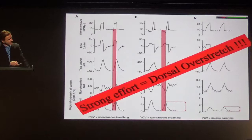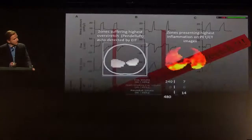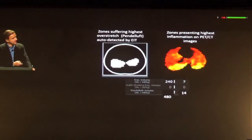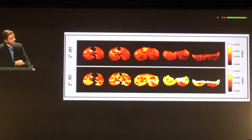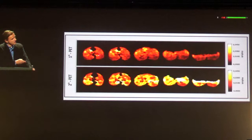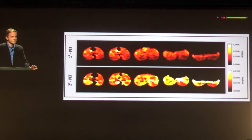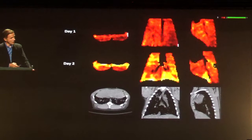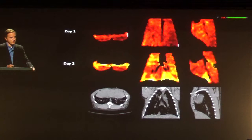Whenever we have too strong effort, this dorsal overstretch occurs independent of the mode of ventilation. When animals perform very strong Pendelluft over hours of mechanical ventilation, they have a first hit of lung injury, and then 24 hours later an increase in inflammation due to this big overstretch — and the tidal volume in these cases was only 5 to 6 mL/kg. This clearly shows there is a localized overstretch that you cannot sense in the global signal collected in the proximal airway. The injury is very close to the diaphragm, in the regions of really big stress.